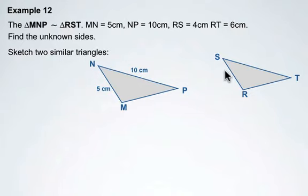We can label that triangle with the vertices RST. Now we'll put in the side lengths that we know. RS is 4 centimeters, and RT is 6 centimeters.